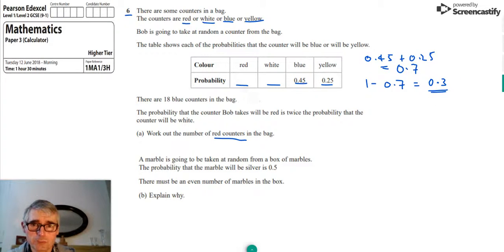Now, that is the combined probability of either getting a red or a white. But we are told that the probability Bob takes a red is twice the probability that he takes a white. So we could say the ratio of red to white counters would be 2 to 1. So we can split this probability 0.3 in the ratio 2 to 1.